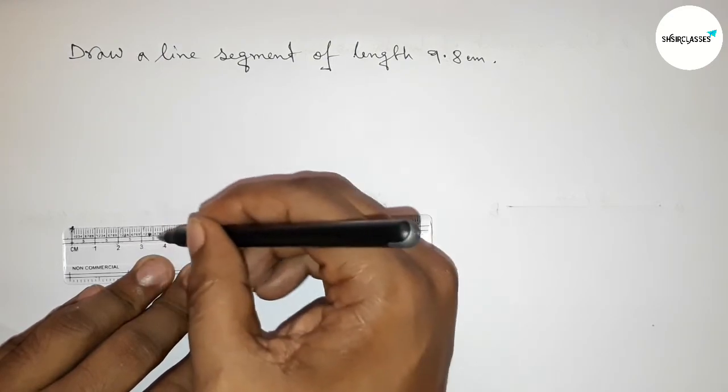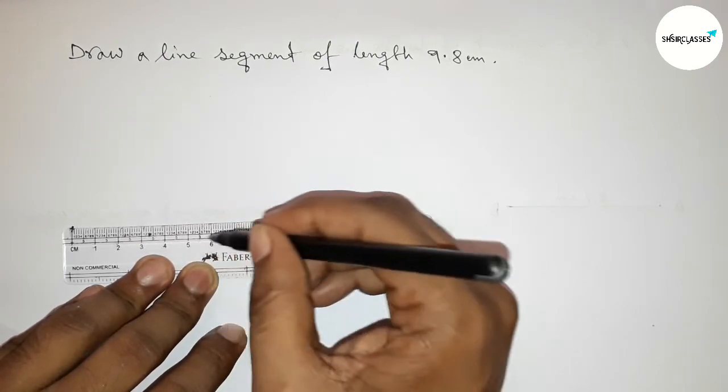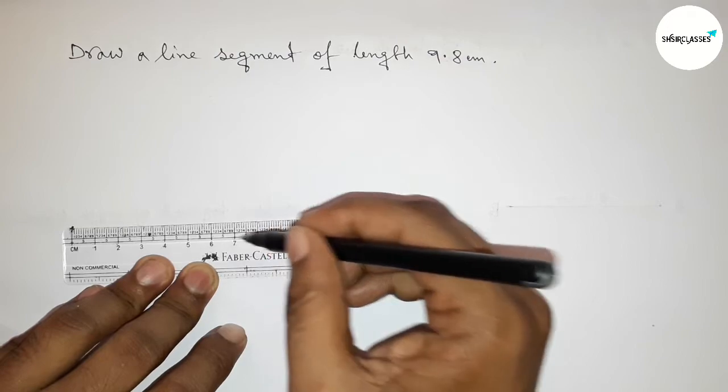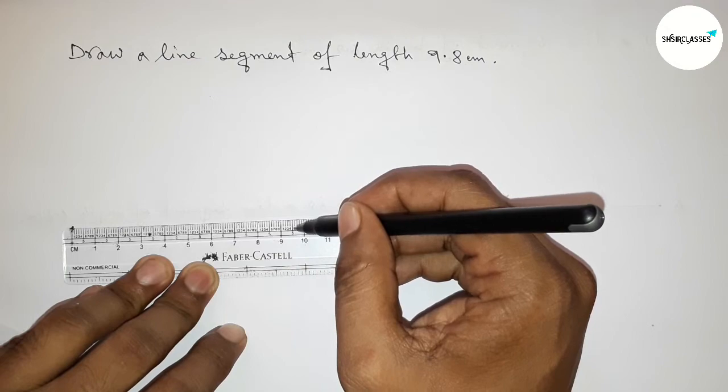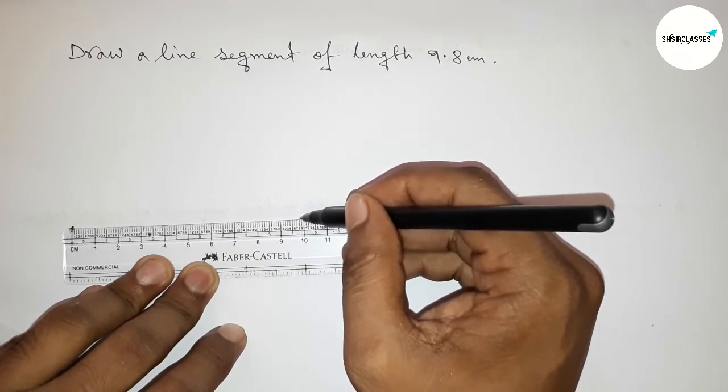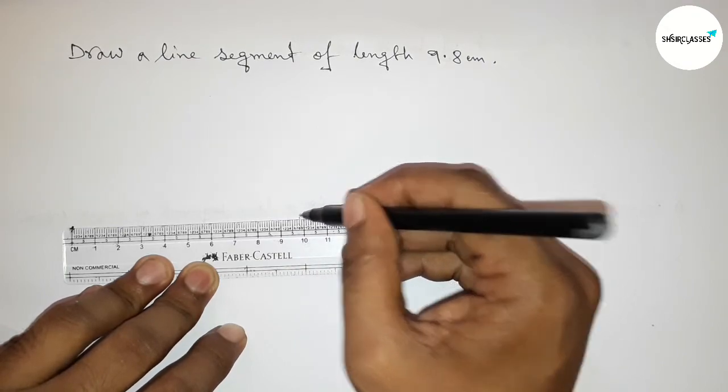Three, four, five, six, seven, eight, nine. This is nine point five, six, seven, eight. So this is nine point eight centimeter.